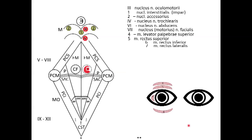Number seven is musculus rectus lateralis, and number eight is musculus rectus medialis. So we can find four rectus muscles from all four sides of the eyeball: musculus rectus superior, musculus rectus inferior, rectus lateralis, and rectus medialis.